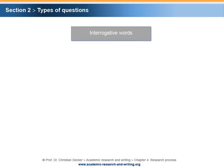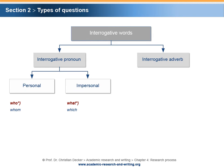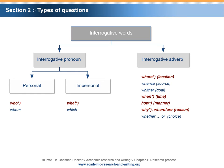Different interrogative words are used in order to formulate research questions. More precisely, interrogative pronouns and interrogative adverbs can be distinguished from each other. Personal interrogative pronouns are who and whom. Impersonal interrogative pronouns are what and which. Interrogative adverbs include: where, in the case of a question related to a location; whence, for a question related to a source; whither, for a question related to a goal; when, for a question related to time; how, for a question related to manner; and why and wherefore, for a question related to a reason.